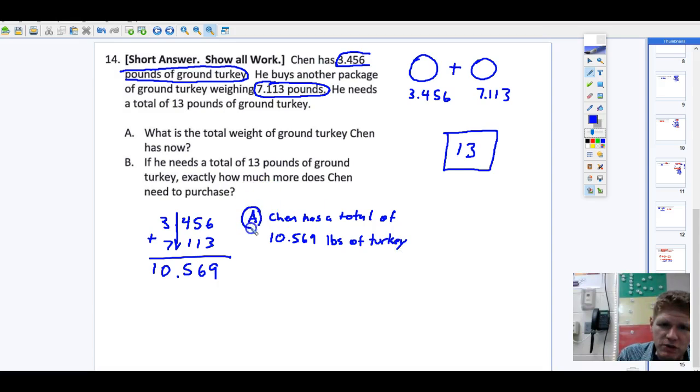There's my letter A, and notice I'm going to circle that so I can show that to everybody, and I might even box it here. There's part A. Now, for part B, if he needs a total of 13 pounds, exactly how much more does he need to purchase? Well, if he has this much, and he needs this much, then we need to find out how much extra he needs. And to do that, we're going to subtract.